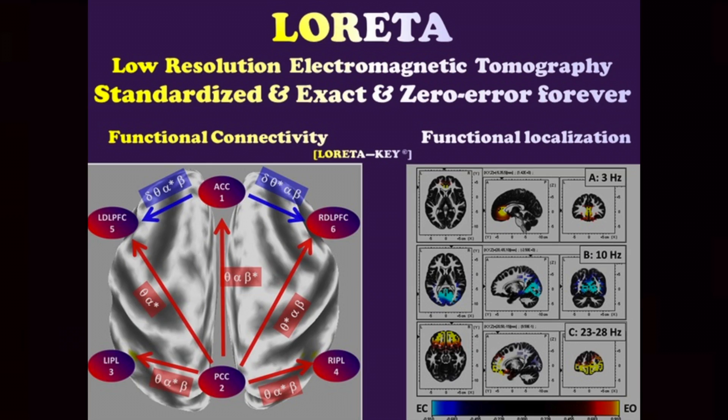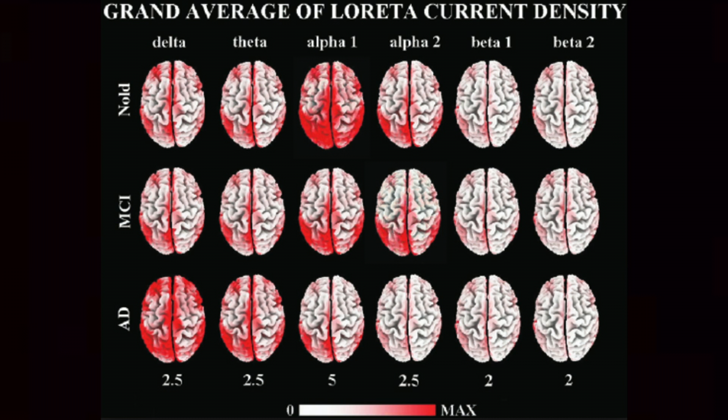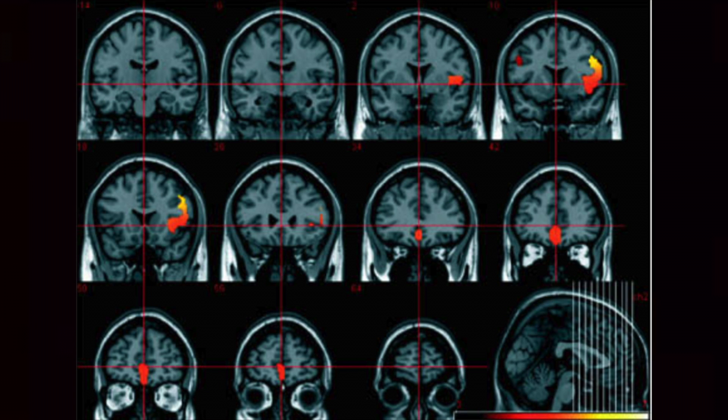One cool thing about having the computer break down the locations of the EEG signal through the inverse problem is you can create programs like LORETA, which maps the EEG signal over an MRI brain scan of the patient. You take an MRI scan before or after the EEG session, and once the computer knows where the signals are coming from, it can overlay that map onto the MRI brain — giving you a picture showing the whole brain and where the EEG signals are coming from in the subject.